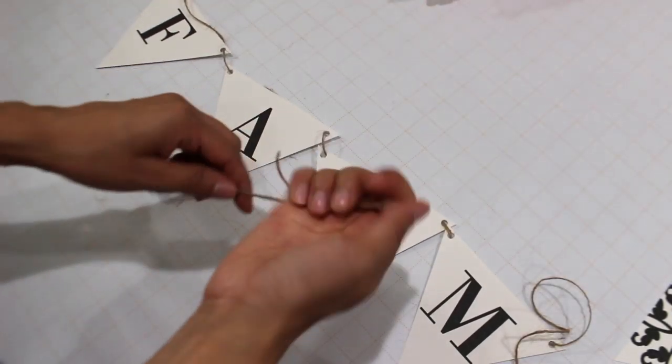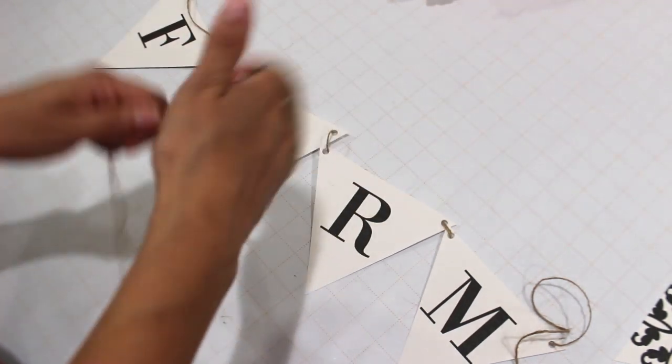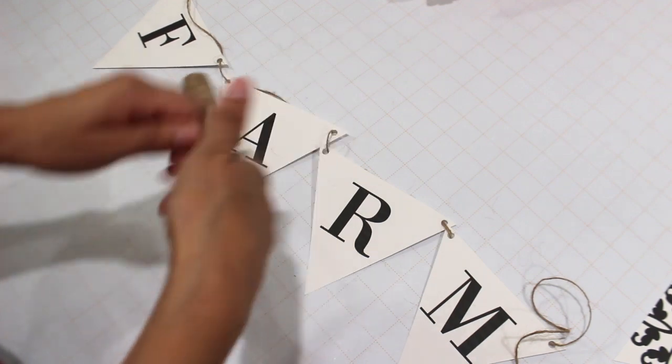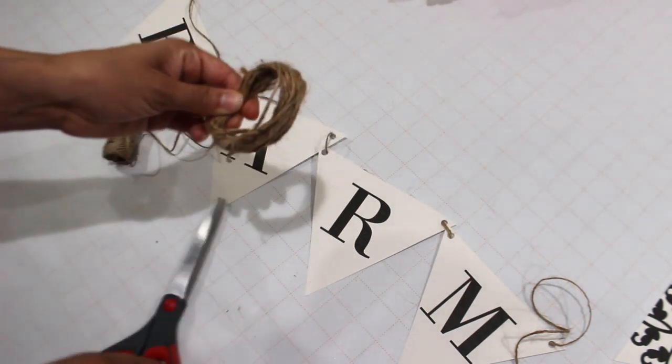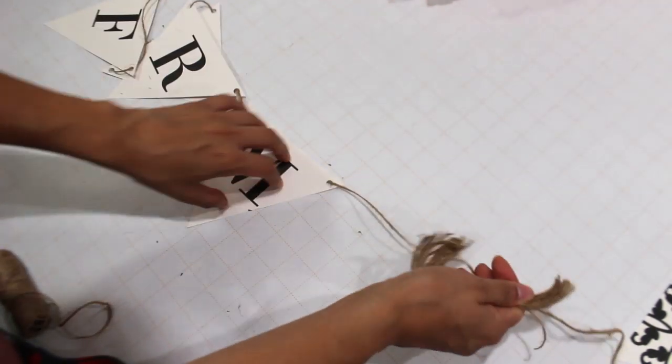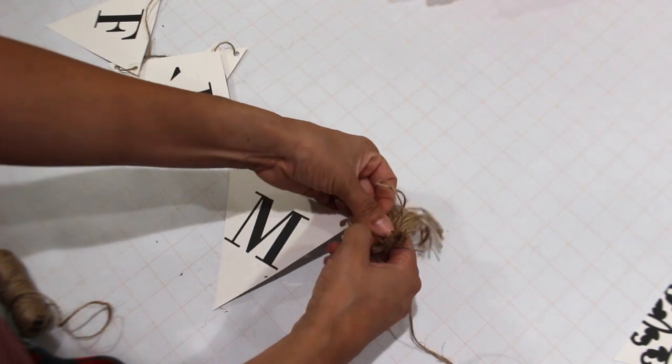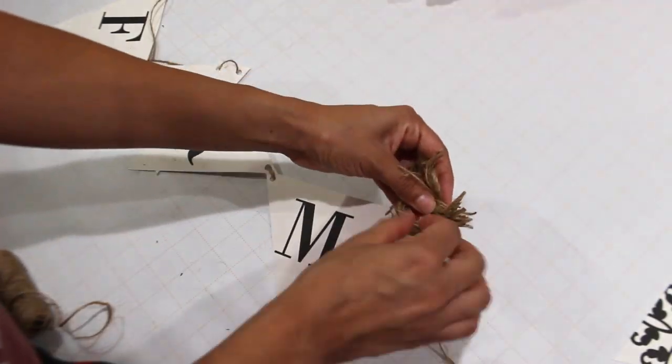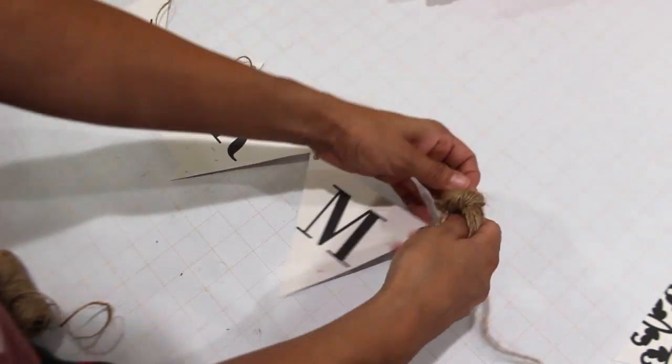So to create the two tassels, what I'm gonna do is just take the twine around my hand and I'm gonna go around 20 times, and then I'm gonna cut it. So I just take it off of my hand, cut the bottom of it, and then I'm gonna create a knot at the top of it around the jute twine right next to the F and the M.